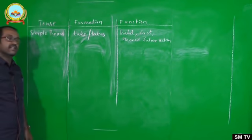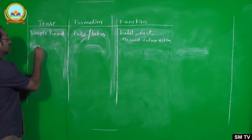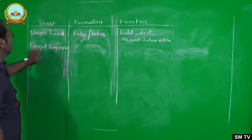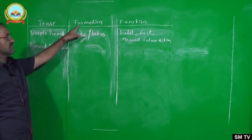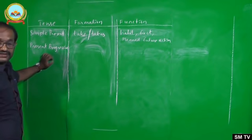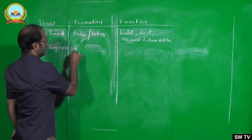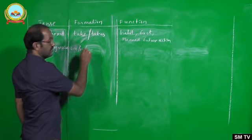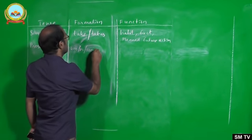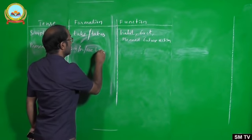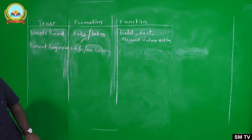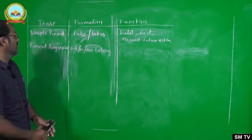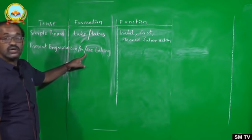Simple present tense is formed using either the base form or S form of the finite verb. The functions are: to express a habitual action, to refer to a fact, and to express a planned future action. Now let us move on to the second tense — present progressive. It is formed using either 'am', 'is', or 'are', followed by the main verb with '-ing' added to it — that means 'taking'.